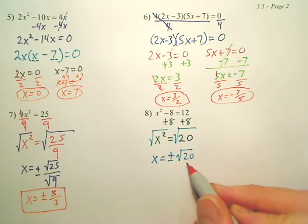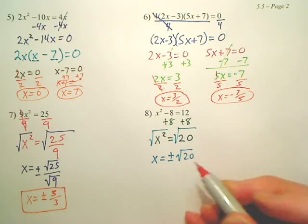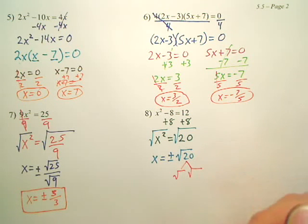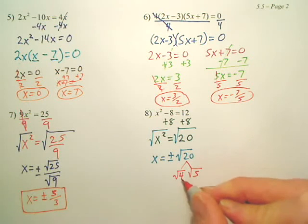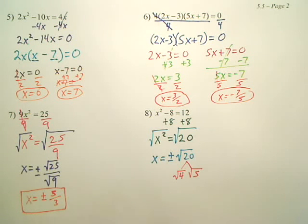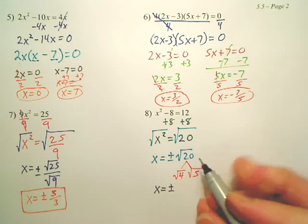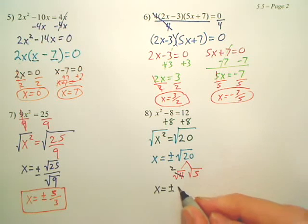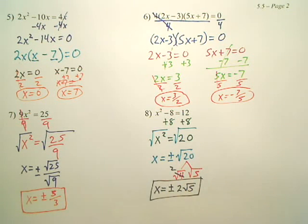That's our answer. But, can we simplify square root 20? Back to the beginning of section 5.5, we have to simplify square roots. Square root 20 is what square root, what perfect square root goes into there? 5 and 4, because the square root of 4 is going to be nice and neat. So, it looks like we're going to have x equals positive or negative. The square root of 4 is 2, correct? There's our answer. Positive or negative 2√5.